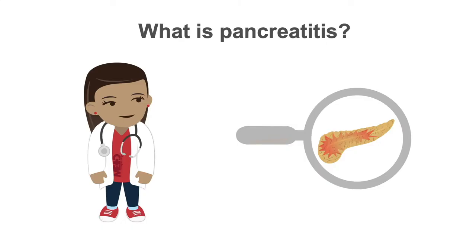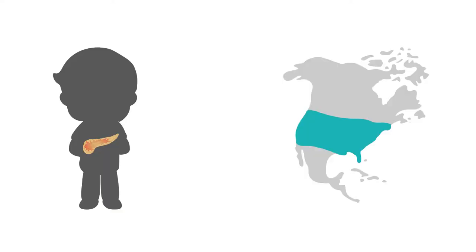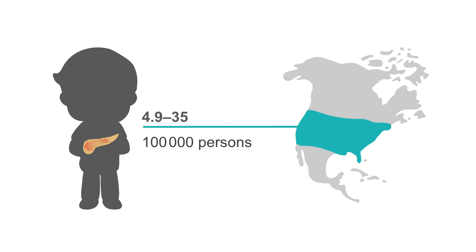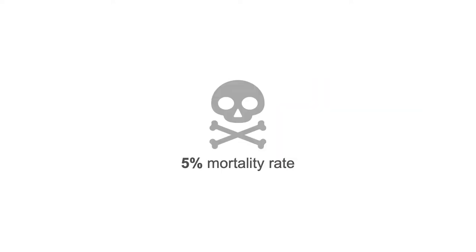In this Med Mastery lesson, we will discuss acute pancreatitis. So what is pancreatitis? It is acute inflammation of the pancreas. In the United States, the annual incidence of acute pancreatitis ranges from 4.9 to 35 cases per 100,000 persons. Worldwide, the incidence is increasing due to increased rates of obesity and gallstones. Overall, the mortality rate is approximately 5%.